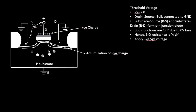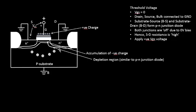We will continue from that point where we applied positive gate voltage and now we will increase it. This depletion region behaves very similar to a PN junction diode under reverse bias — the P-type area gets depleted of its majority carriers, which are holes, and a similar thing is happening here where the P-type region is getting depleted of holes.